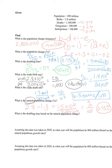Now I'll find the doubling time based on the natural population rate. Doubling time = rule of 70: 70 divided by 0.75, which gives 93.3 years. So the doubling time based on natural population rate is 93.3 years.